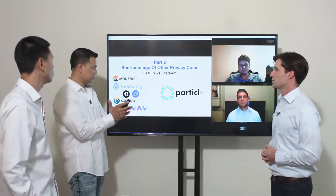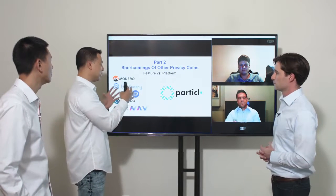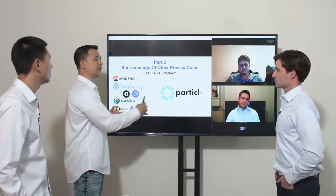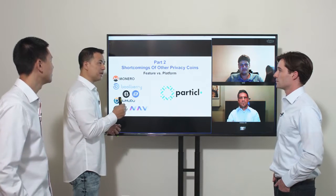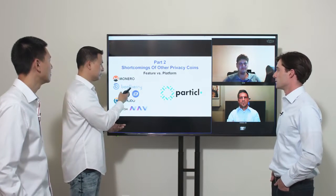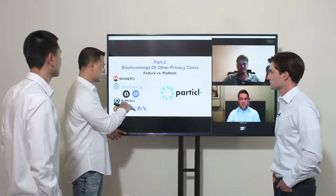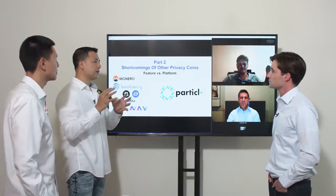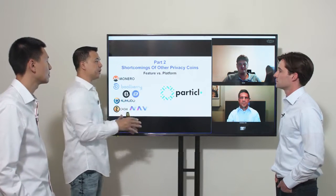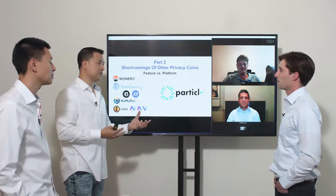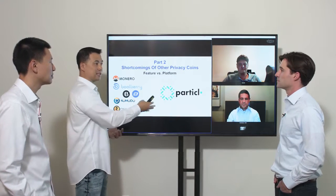To summarize for investors: the reason to go the platform route versus the feature route is, first, you didn't want a bigger project like Bitcoin or Ethereum to adopt your one feature and make you irrelevant since their network is so much larger. Second, these privacy coins need a marketplace or use case, whereas you're building the marketplace and use case for the token at the same time — so when people have Particle tokens, they have a place to actually use them.